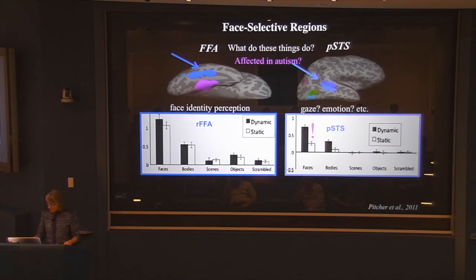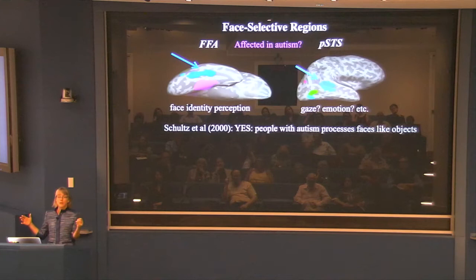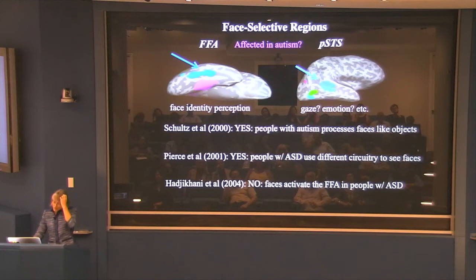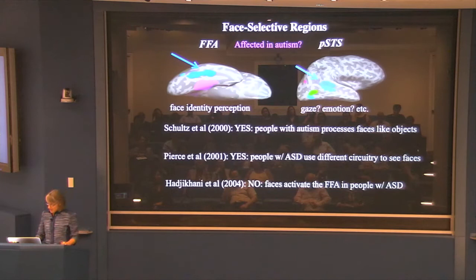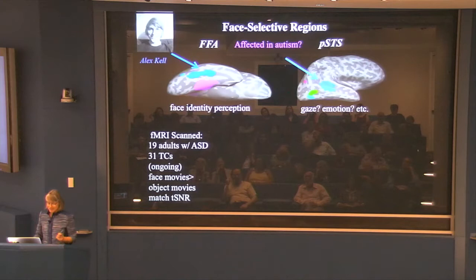Now we can ask: are these regions affected in autism? We scan adults with autism — properly ADOS-assessed — on this same paradigm. Background: there's a paper by Bob Schultz saying there's a big difference, that people with autism basically process faces as if they were objects. That was a compelling story that took off. Then a study by Hajikani found the FFA response is pretty much the same in people with autism and typical people — but that study isn't cited as much. Anyway, we thought we'd give it another look.